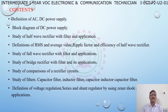Contents of this chapter: definition of AC-DC power supply, block diagram of DC power supply, study of half wave rectifier with filter and applications, definitions of RMS and average value, ripple factor and efficiency of half wave rectifier, study of full wave rectifier, bridge rectifier with filter and applications, study of comparisons of rectifier circuits, study of filters — capacitor filter, inductor filter, LC filter — definition of voltage regulation, and series and shunt regulator using Zener diode.